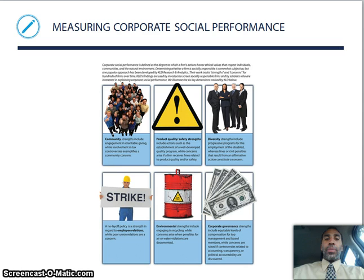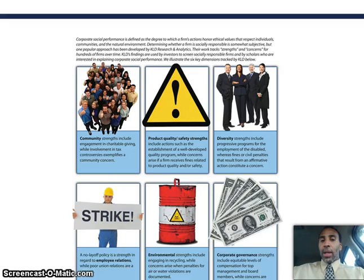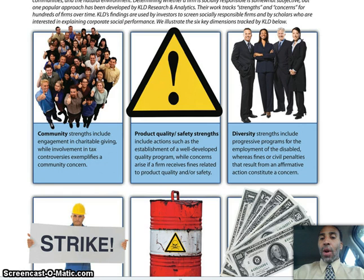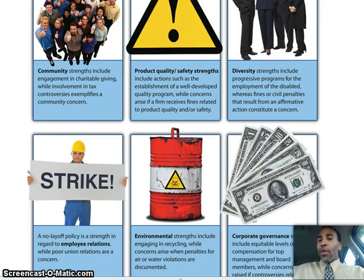Measuring corporate social performance: community strengths include engagement and charitable giving, while involvement in tax controversies exemplifies a community concern. Product quality and safety strengths include a well-developed and documented quality program, while concerns arise if a firm receives fines related to product quality or safety. Diversity strengths include progressive programs for the employment of the disabled, whereas fines from affirmative action violations constitute a concern. We're looking at both the good and the bad.